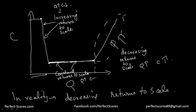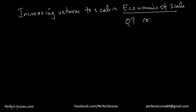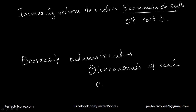Increasing returns to scale will actually lead to economies of scale, which means that as you increase your output, your cost decreases. Decreasing returns to scale means diseconomies of scale, which means that as you increase your output, your average cost actually increases.